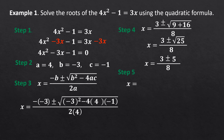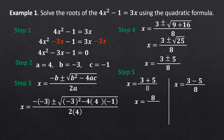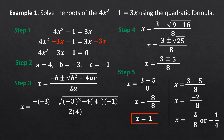Step 5: Solve the resulting linear equations. Splitting the equation: X equals 3 plus 5 over 8, and X equals 3 minus 5 over 8. For the first equation, 3 plus 5 equals 8, so X equals 8 over 8, which equals 1. For the second equation, 3 minus 5 equals negative 2, so X equals negative 2 over 8, which simplifies to negative 1 over 4. Therefore, the solutions or roots of the given equation are 1 and negative one-fourth.